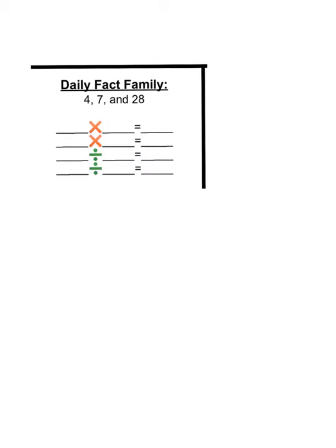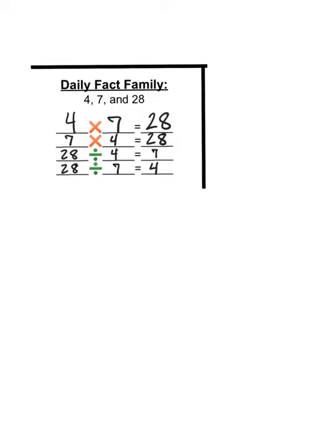All right, daily fact family: four, seven, and twenty-eight. Well this is easy. These two we can reverse, four times seven and seven times four. They mean the same thing, both of them equal twenty-eight. And I can take my product, twenty-eight, I can divide it into four equal groups and get seven in each group, or I can divide it into seven equal groups and get four in each group. Okay, so that was quick, easy, and painless.